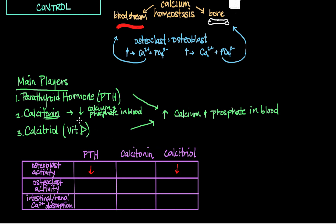Calcitonin, on the other hand, tones down calcium and phosphate in the blood — it takes these ions and puts them back into bone. So as calcitonin increases, we would expect osteoblast activity to increase, because more bone is being formed from calcium and phosphate taken from the blood. You'll see this theme of parathyroid hormone and calcitriol having the same effect, because they both increase calcium and phosphate in the blood.